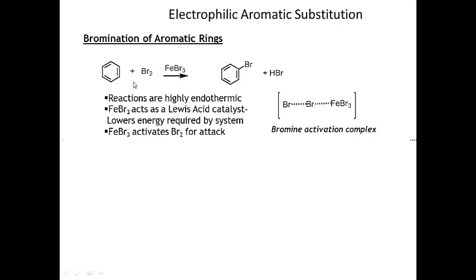These reactions are highly endothermic, so you have to use iron bromide (FeBr3) as a catalyst, or some Lewis acid catalyst, to activate bromine. When iron bromide is added, it forms an activation complex where the bromine-bromine bond is weakened and is ready for nucleophilic attack by the ring. The Lewis acid catalyst lowers the activation energy and speeds up the reaction, and iron bromide also activates bromine for attack.